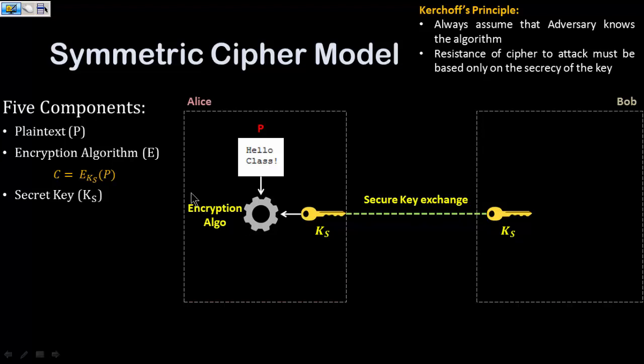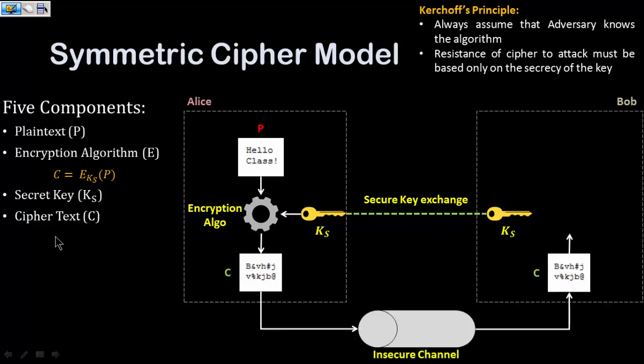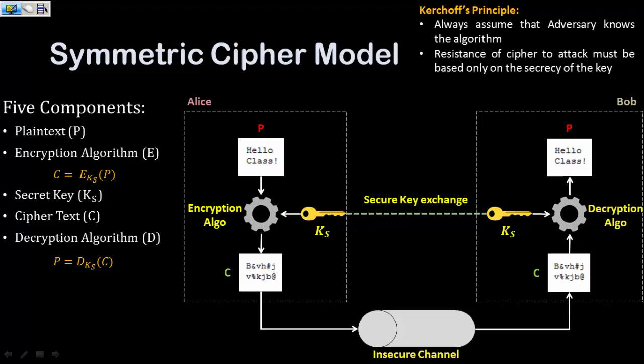Once the ciphertext has been calculated, that ciphertext will be moving from the insecure channel. Once it reaches Bob, Bob has to feed the ciphertext into the decryption algorithm. You need a decryption algorithm, and on that decryption algorithm you have to apply the secret key that you have shared with Alice, and that secret key would help in the calculation of the plaintext back. This P is generated with the help of the decryption algorithm applied by the shared secret key onto the ciphertext that has been received by Bob.